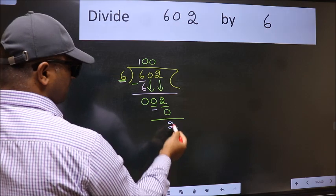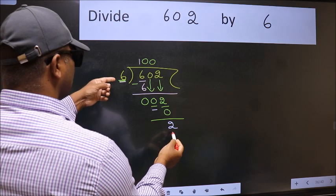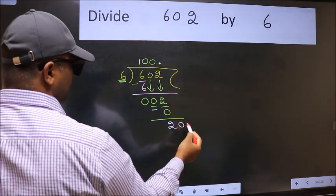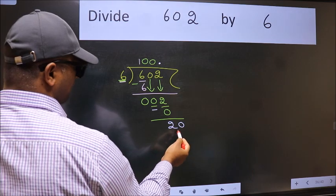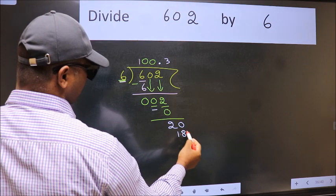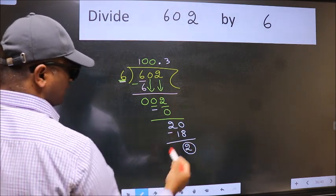Over here, we did not bring any number down. And 2 is smaller than 6. So now we can put dot and take 0. So 20. A number close to 20 in 6 table is 6, 3 is 18. Now we subtract. We got 2 again.